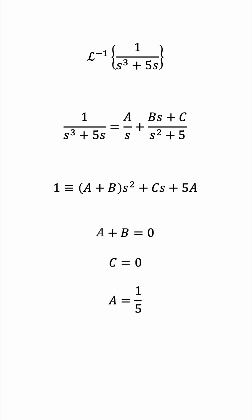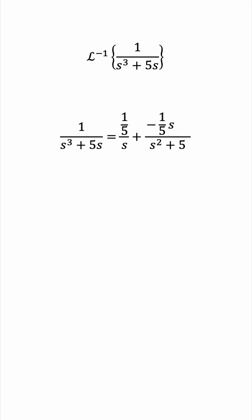So, from the first equation, b must be negative one-fifth. And now we'll substitute those values and perhaps factor a one-over-five outside.